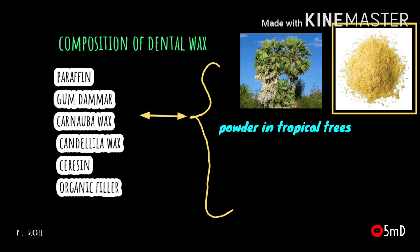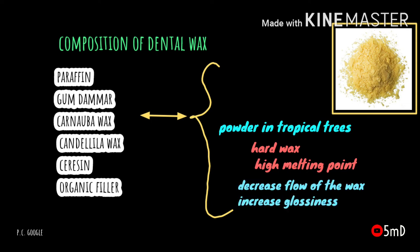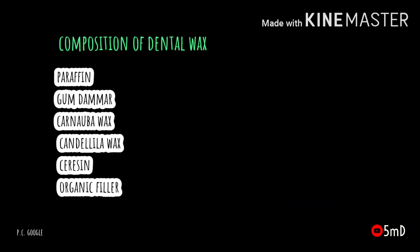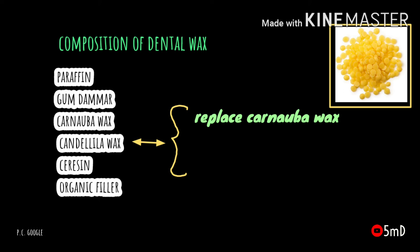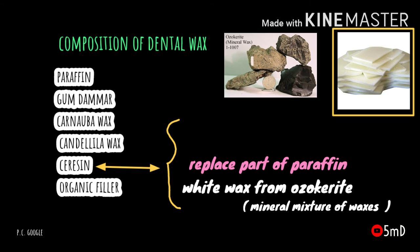Carnauba wax is a powder formed on certain tropical palm trees. The wax is very hard and has a high melting point compared with other types. It is combined with paraffin to decrease the flow at mouth temperature and also increases the glossiness of the wax. Candelilla wax can also be used to replace carnauba wax, though it is not as hard. Ceresin may replace part of paraffin; it is a white wax derived from ozokerite, which is a waxy mineral mixture.